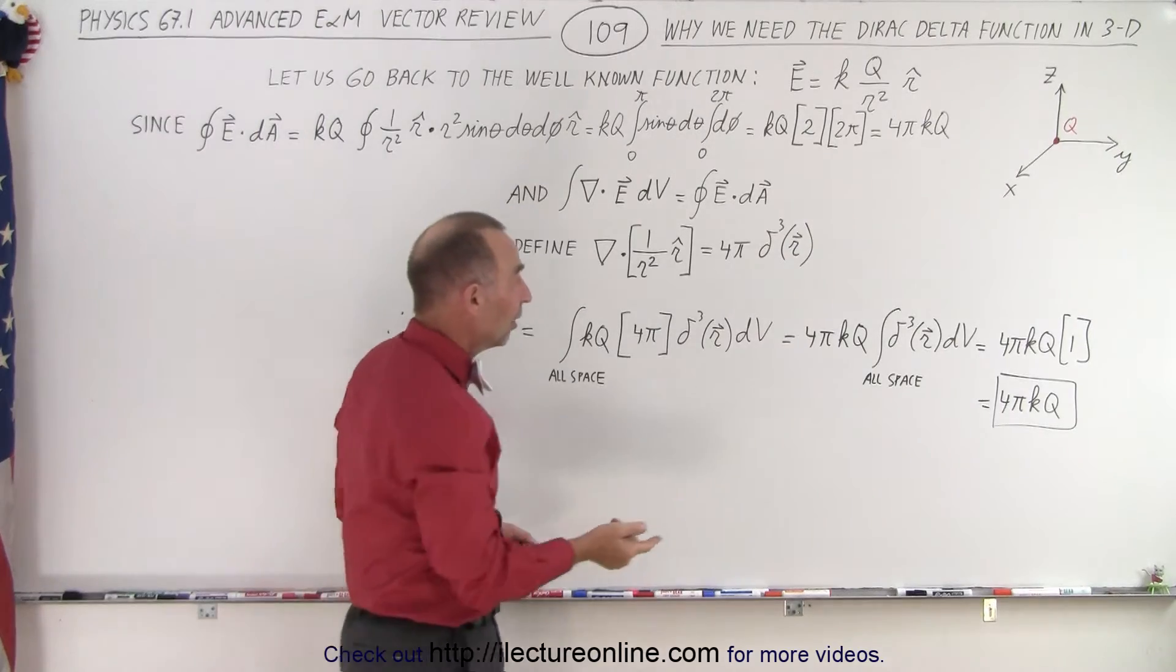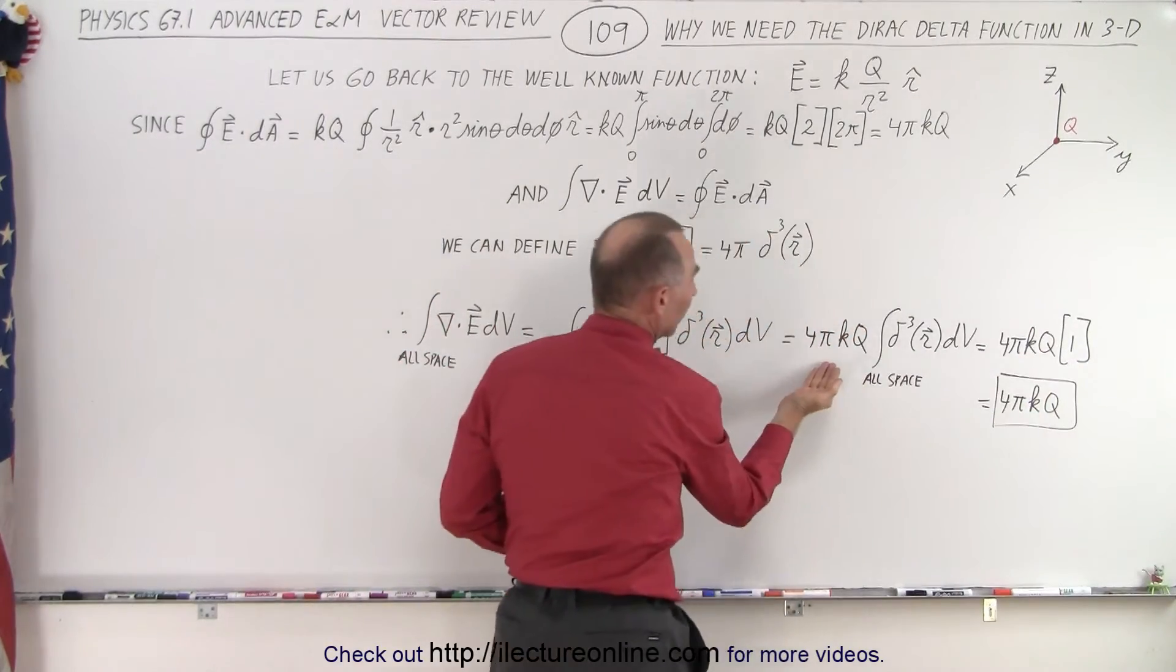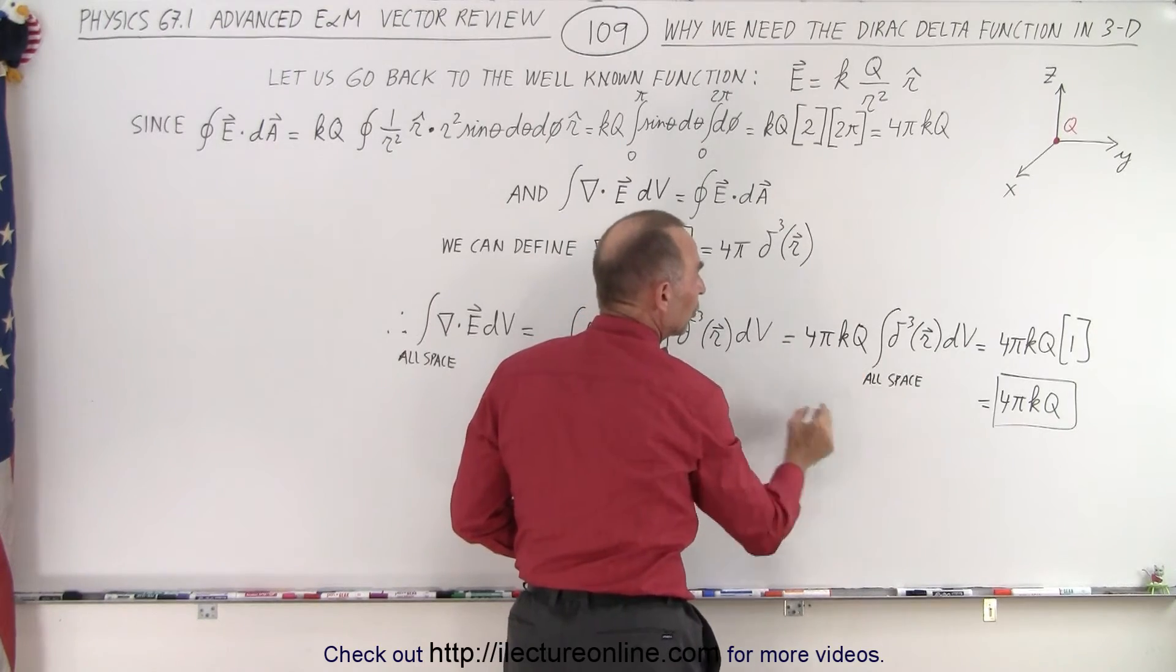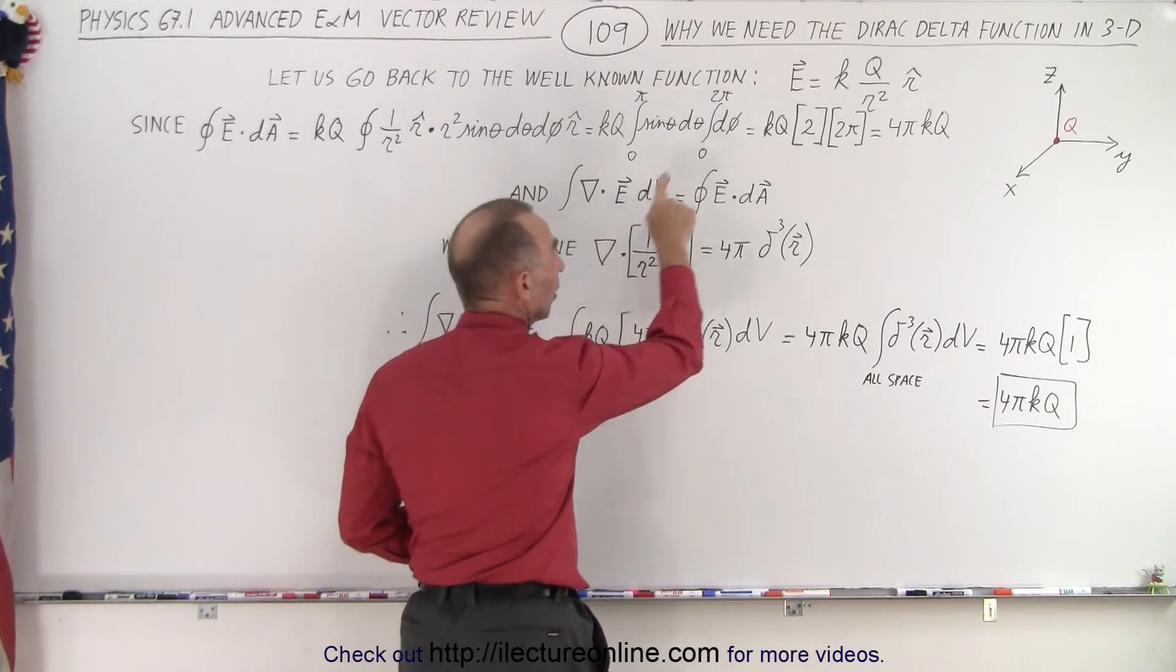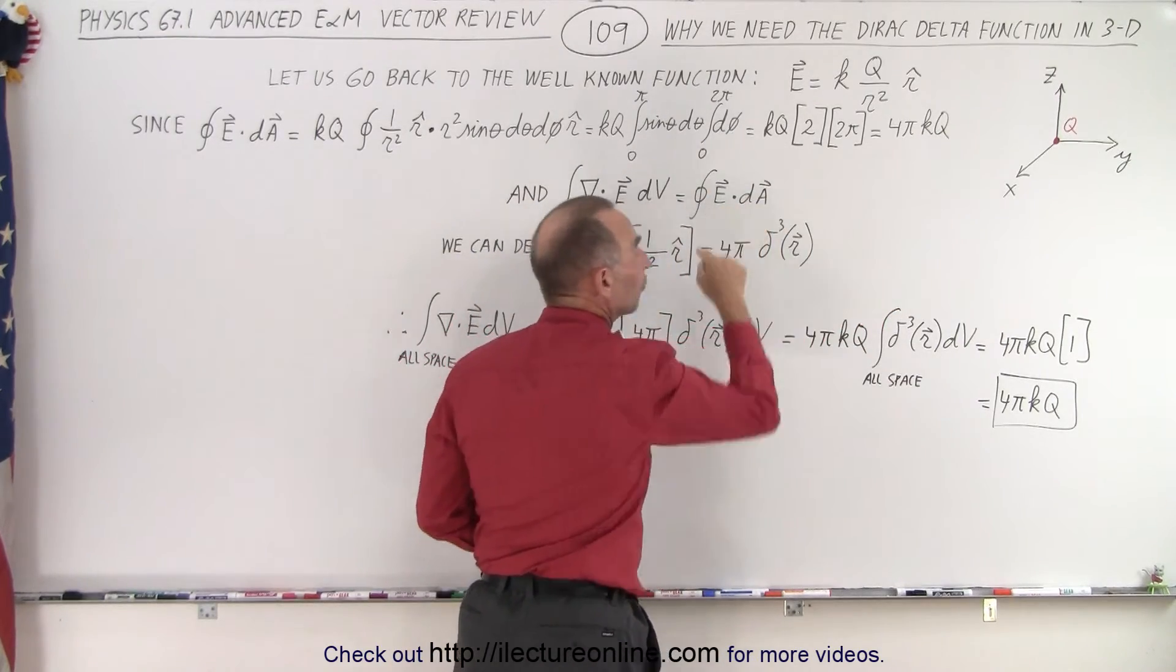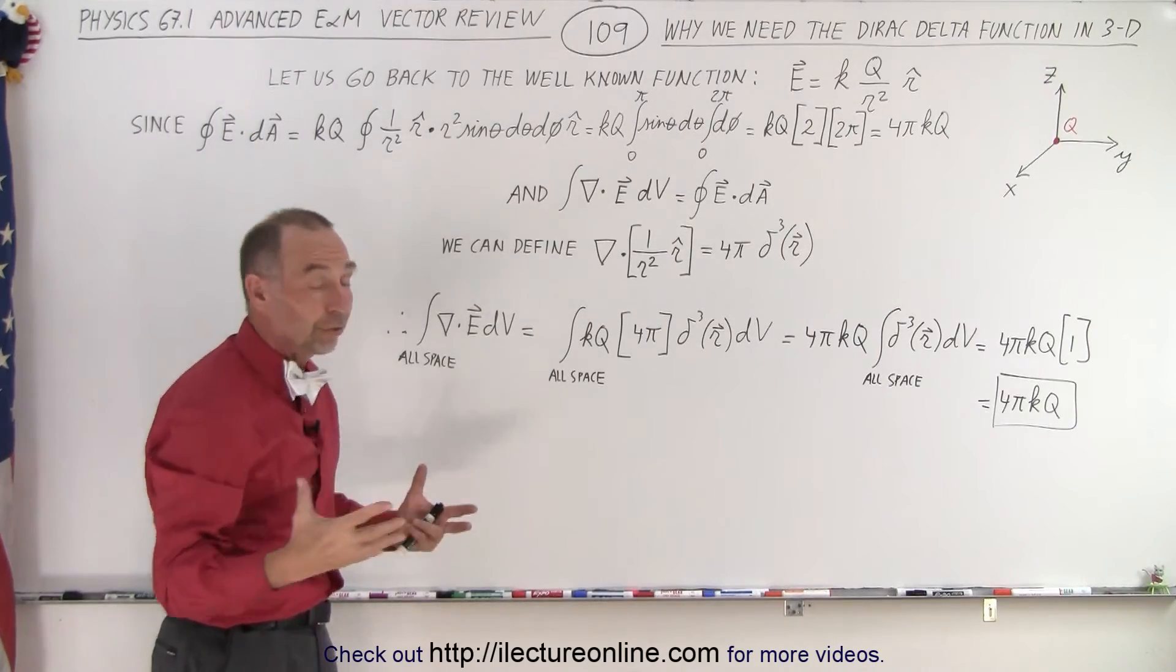And then by definition, since the integral of the Dirac delta function equals 1 and we're able to then pull out 4π and k and q, we get the exact same result for the gradient of the electric field of a point charge as we would for the Gaussian surface and the electric flux then going through that Gaussian surface.